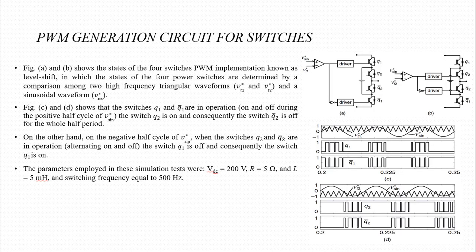The PWM generation circuit for switches (Figure A and B) shows the states of the four switches in a PWM implementation known as level shift, in which the states of the four power switches are determined by a comparison among two high-frequency triangular waveforms, VT1 and VT2, and a sinusoidal waveform, Vsign. Figure C and D shows that switches Q1 and Q1-bar are in operation, alternating on and off during the positive half cycle of Vsign, while switch Q2 is on and consequently Q2-bar is off for the whole half period.